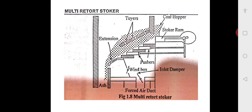The primary air enters the wind box below the retorts — you can see at the bottom there is a wind box and from the bottom the primary air moves inside. An air damper is provided at the air inlet in the wind box to control the airflow. The airflow to the extension grate at entry is further controlled by another damper, since the extension grate requires a small quantity of air. The ash from all the retorts falls down into the ash pit.